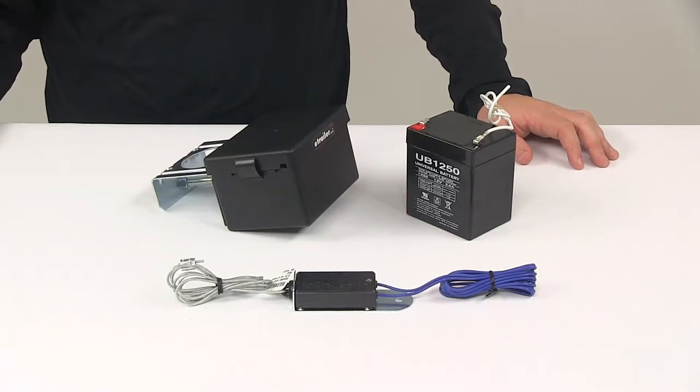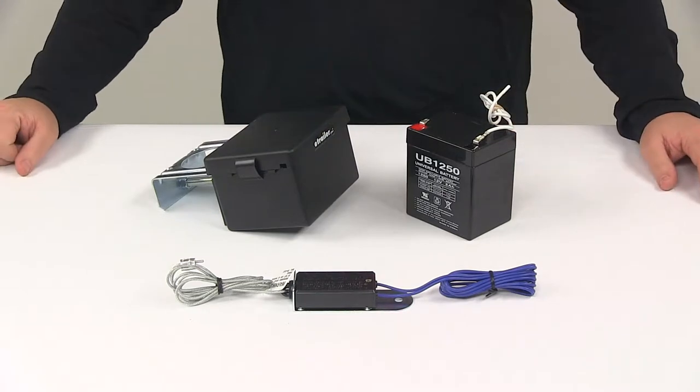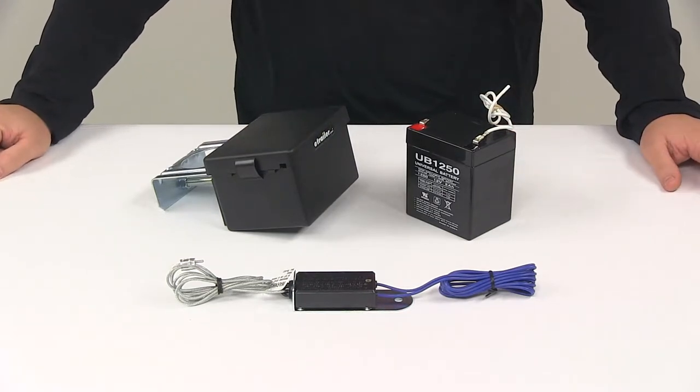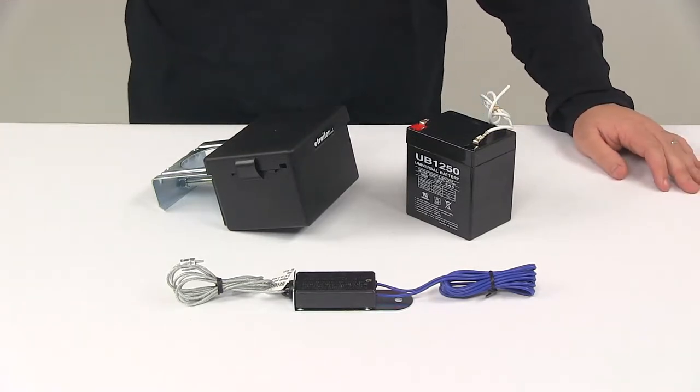Today, we're going to be taking a look at the Curt SoftTrack 2 Trailer Breakaway Kit. Breakaway systems activate your trailer's electric brakes if the trailer disconnects from the tow vehicle. That's going to help prevent a full runaway situation.